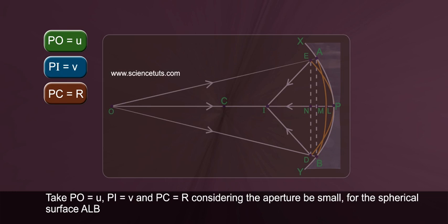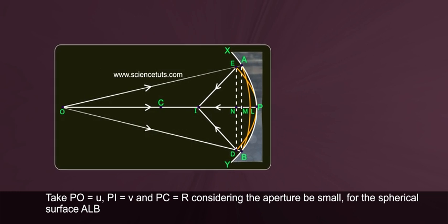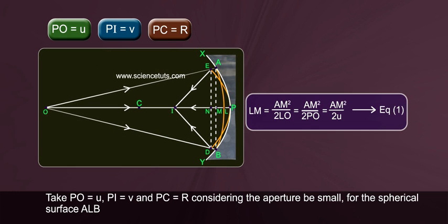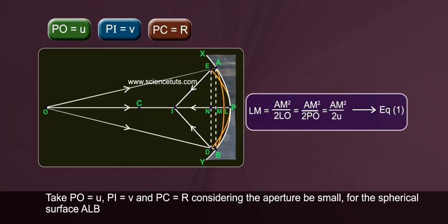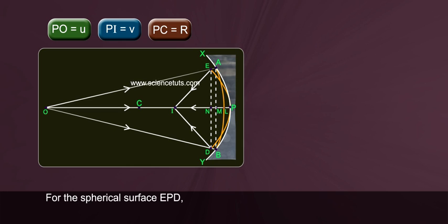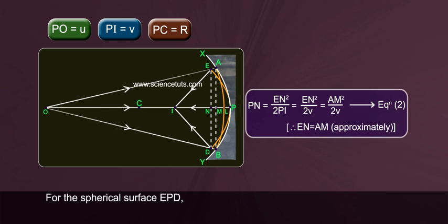For the spherical surface ALB: LM equals AM squared by 2LO, equals AM squared by 2PO, equals AM squared by 2U — Equation 1. For the spherical surface EPD: PN equals EN squared by 2PI, equals EN squared by 2V, equals AM squared by 2V — Equation 2.